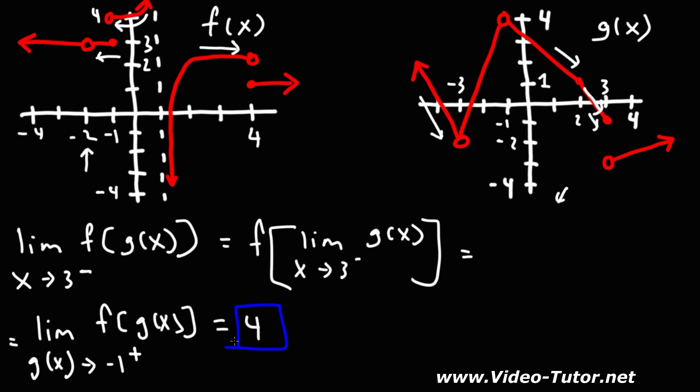That's basically it for this video. Hopefully it gave you a good introduction in terms of how to evaluate limits of composite functions. They can be tricky, but pay attention to this: once you get the value for g, make sure you determine if it's approaching that value from the left side or from the right side — from below or from above. If you're not careful with that part, you could make mistakes and get the wrong answer. So be careful with that part.